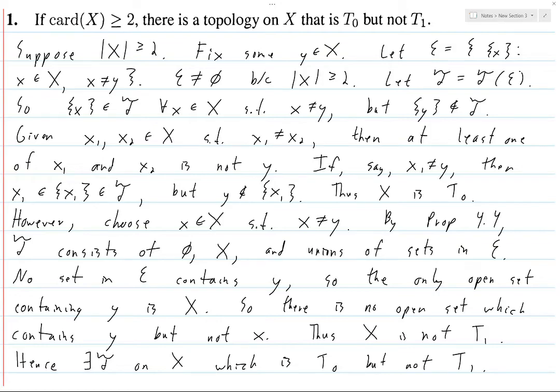But of course, when we saw in the other part, if you choose any x which is not y, then you can't choose an open set containing y which does not contain x. So that's the difference between a T0 and a T1 set.